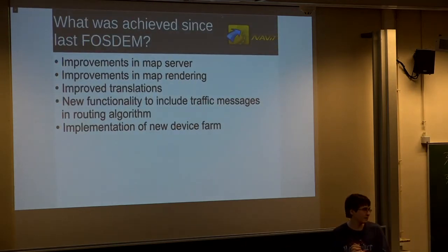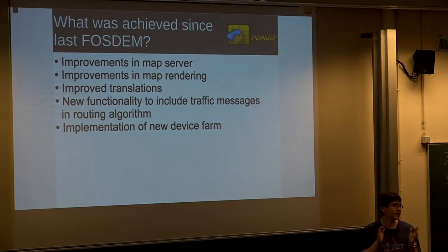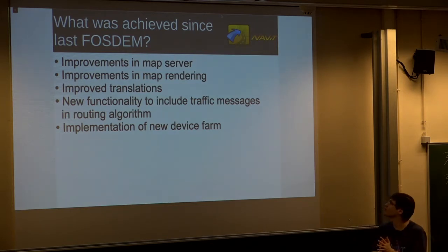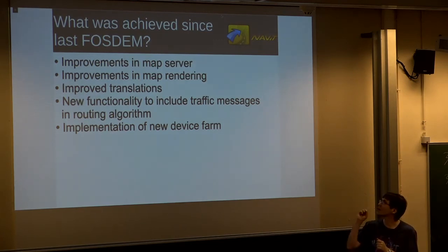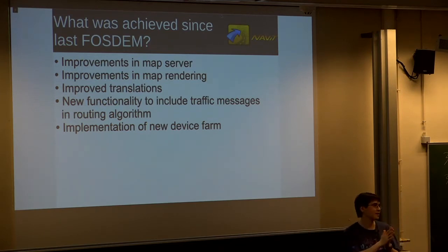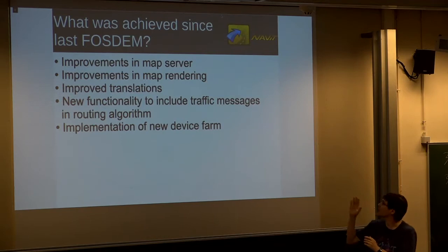So what has happened since my talk last year? We improved the map server, which is used to transform the OpenStreetMap data for others to download. We resolved some issues in the map rendering — for example, we had some over-flooding of areas which should have been land, because the map data was not good enough. We worked on translations. What I find most remarkable is that we still work on the traffic branch, which enables messages about traffic jams, blocked roads, or other problems when you are driving, and that can then be used to adapt the route dynamically.